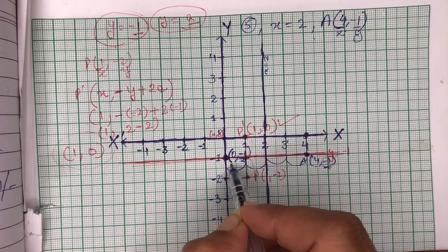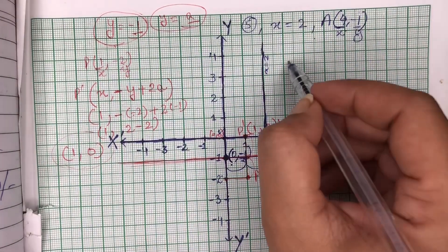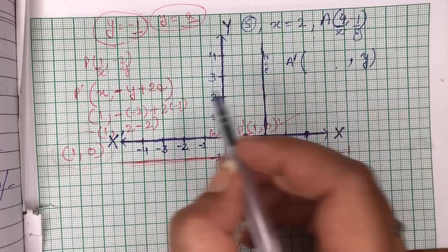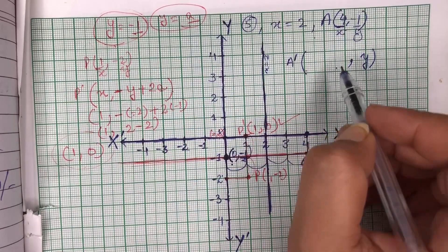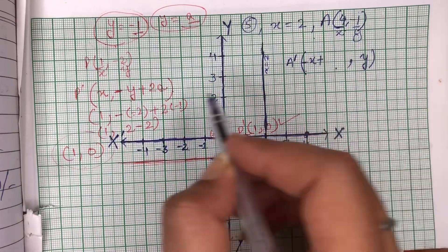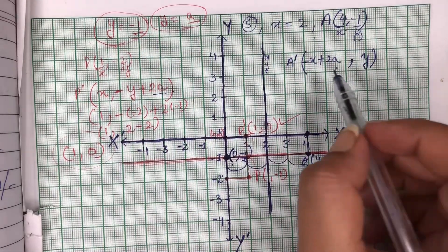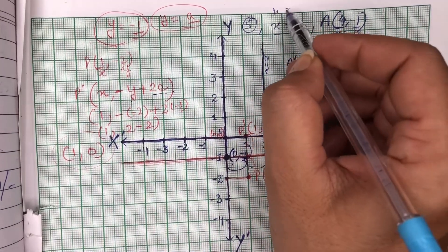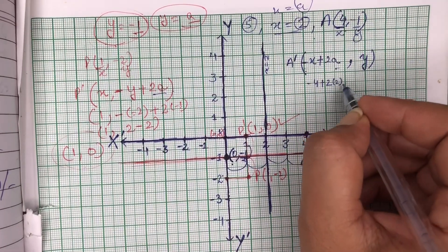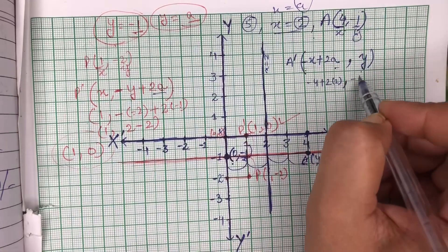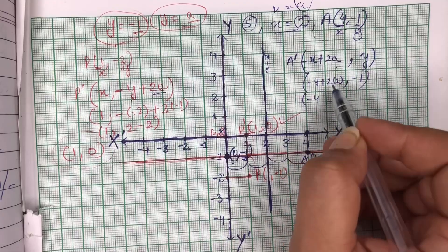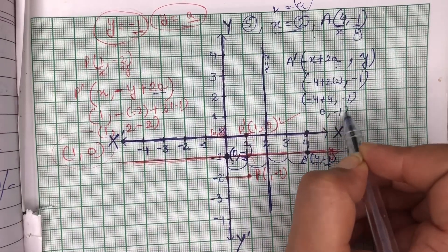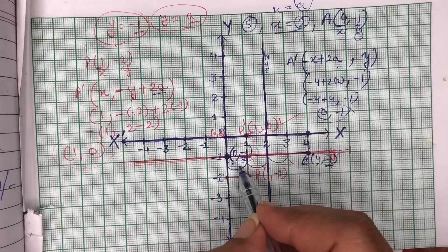Mathematically isko kaise karna hai — yeh point A hai to iski image A'. Y ko to change nahin hona hai, Y ko as it is likhenge. X change hoga same jis manner mein yeh change hua tha — minus y likha tha to yahan minus x aa jayega plus 2a. Y kitna hai is point ke liye — minus 1. X was 4: minus 4 plus 2 times 2 gives minus 4 plus 4 = 0. So coordinates: 0, minus 1 — yahi point aa raha hai jo humne graphically find out kiya tha.